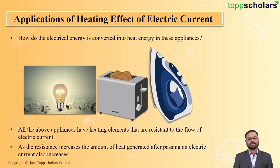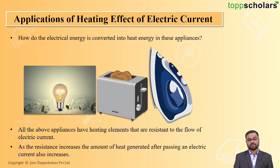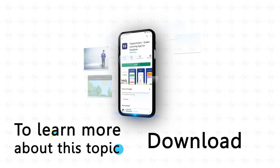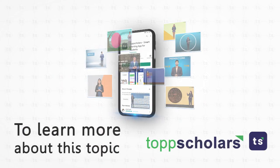When there is a high resistance material, lots of heat is generated. The best example is your electric bulb — the temperature of the bulb filament is generally around 3000 degrees Celsius. That amount of heat comes from the high resistance of the filament. To learn more about this topic, download the Top Scholars app.